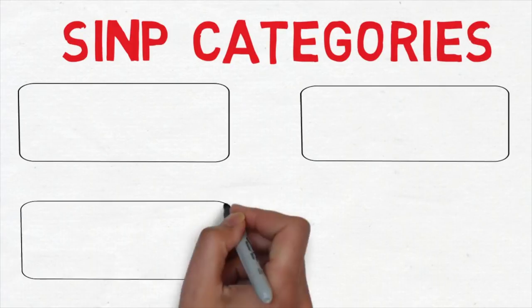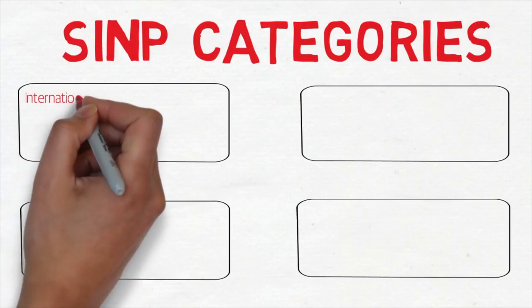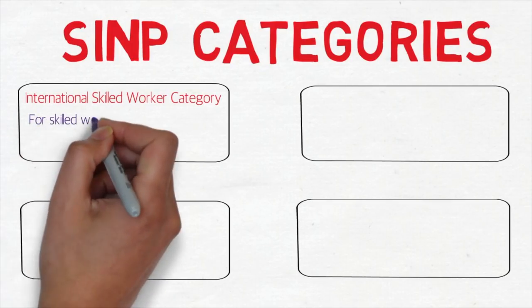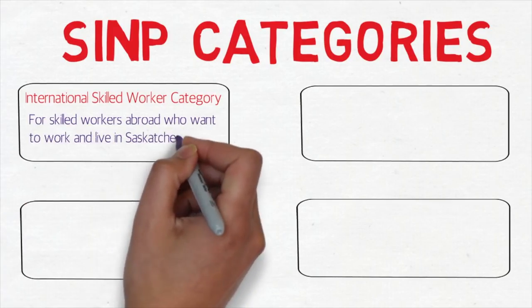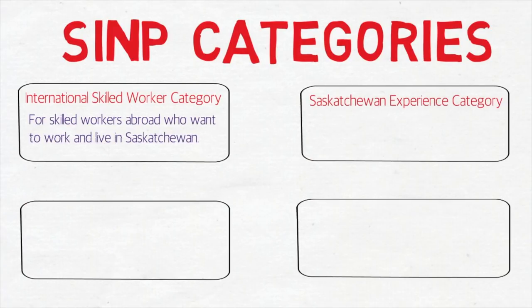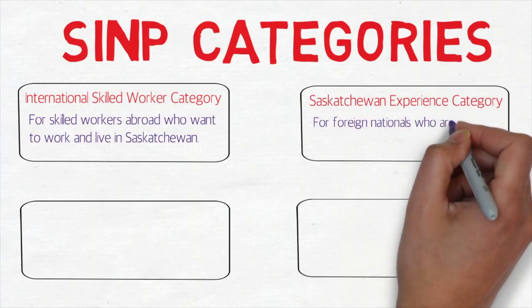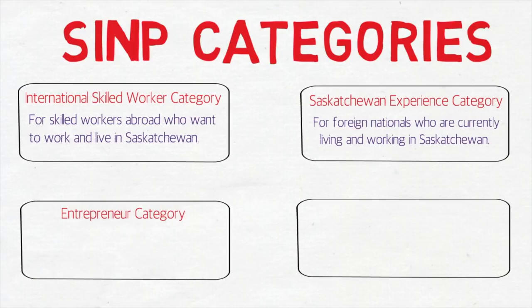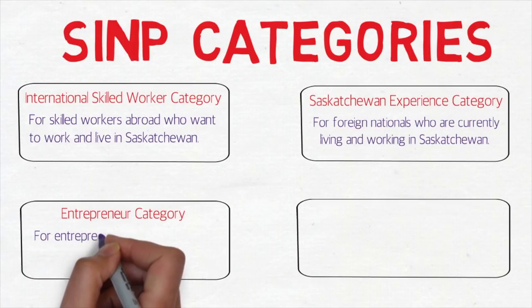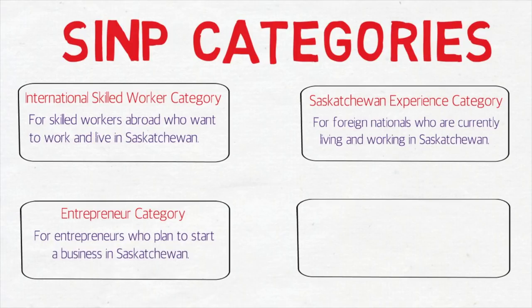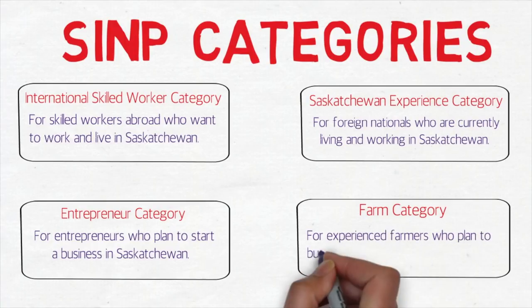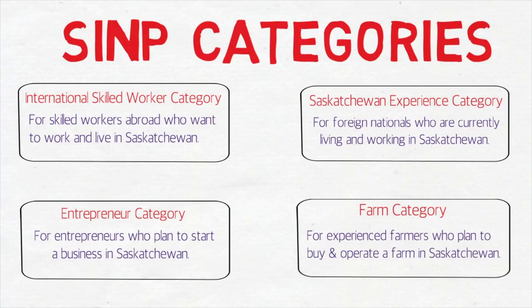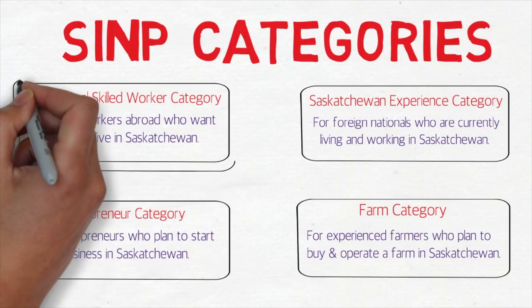Before we discuss the EOI system, let me tell you the categories of SINP. There are basically four categories. The first is the International Skilled Worker category for skilled workers abroad who want to work and live in Saskatchewan. The second is the Saskatchewan Experience category for foreign nationals currently living and working in the province. The third is the Entrepreneur category for those who plan to start a business, and the last is the Farm category for experienced farmers who plan to buy and operate a farm in Saskatchewan.